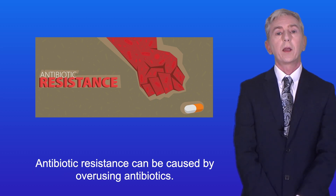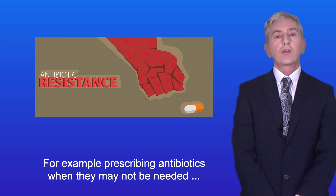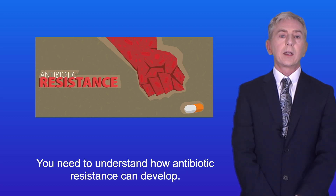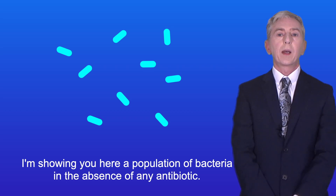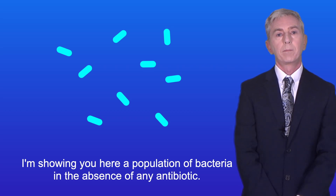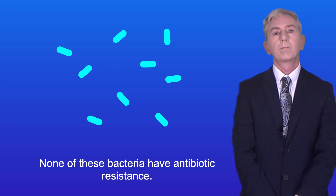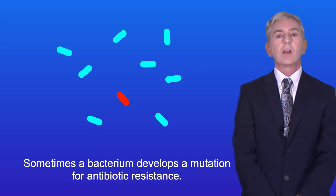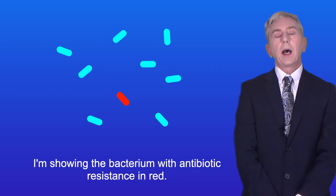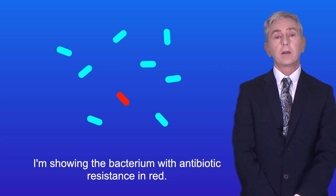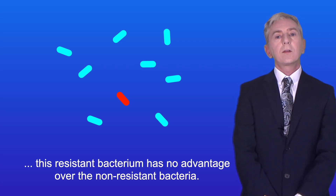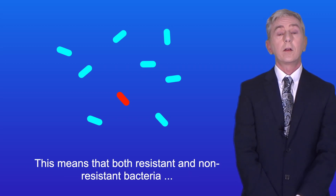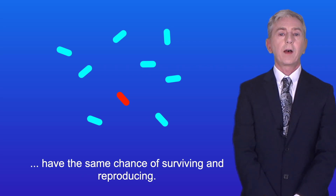Antibiotic resistance can be caused by overusing antibiotics — for example, prescribing antibiotics when they may not be needed or may not be effective. In a population of bacteria with no antibiotic present, none of the bacteria have antibiotic resistance. Random mutations are continually taking place, and sometimes a bacterium develops a mutation for antibiotic resistance. In the absence of antibiotic, this resistant bacterium has no advantage, so both resistant and non-resistant bacteria have the same chance of surviving and reproducing.